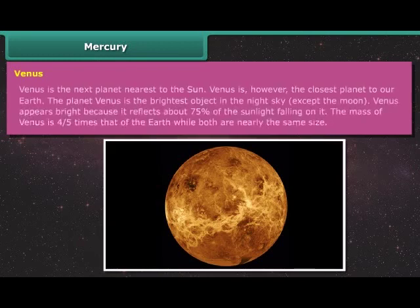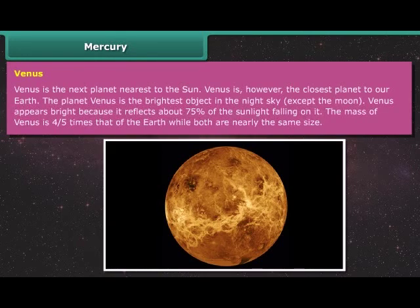Venus is the next planet nearest to the Sun. Venus is however the closest planet to the Earth. The planet Venus is the brightest object in the night sky except the Moon. Venus appears bright because it reflects about 75% of the sunlight falling on it. The mass of Venus is 4/5 times that of the Earth while both are nearly the same size.